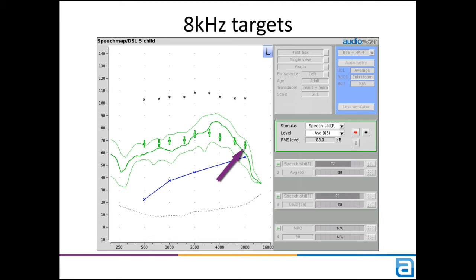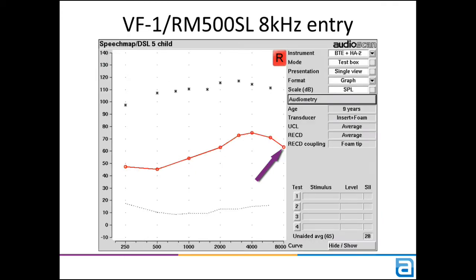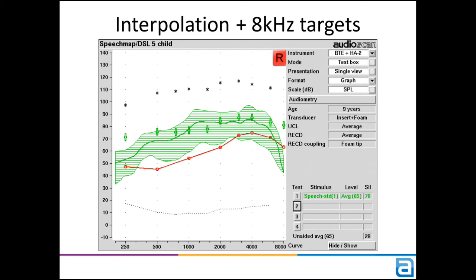This has been implemented across all AudioScan models, and it's meant some additional changes. Verifit VF1, Axiom, and RM500SL previously did not accept audiogram entry up to 8 kHz. This is now required in order to provide the fitting targets at this frequency. Here's what the legacy Verifit screen now looks like with target interpolation, 8 kHz audiogram entry, and 8 kHz DSL targets.